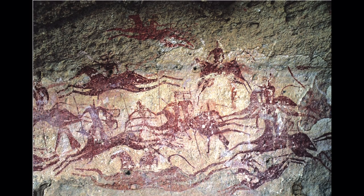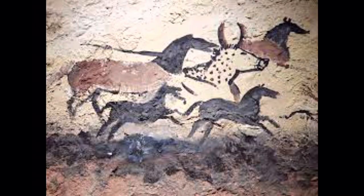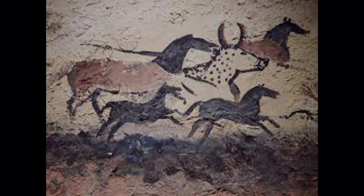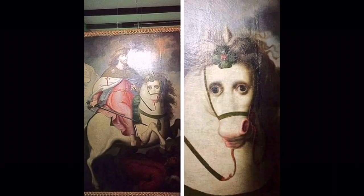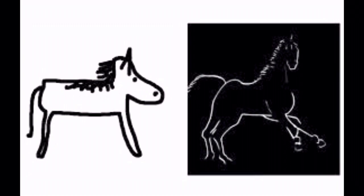Early examples of the flying gallop can even be seen in cave paintings from thousands of years before Muybridge's revelation, like in the Hall of Bulls in Lascaux, France. The ability to capture a precise moment in time was created in the process of photographing the horse and was a massive innovation to the film world, gave birth to a new style of portraying horses in art, and proved the flying gallop to be inaccurate and not representative of a true horse in motion, allowing horses to be depicted more realistically.